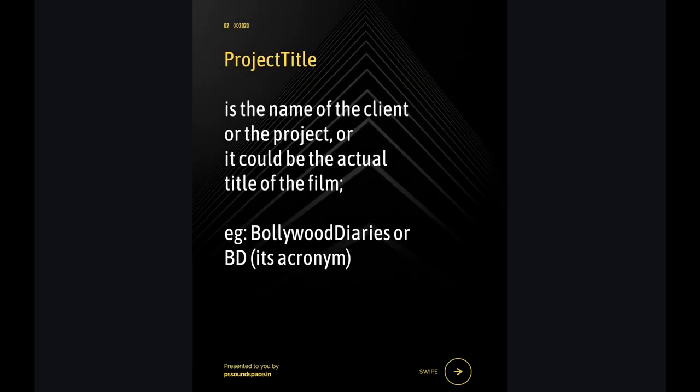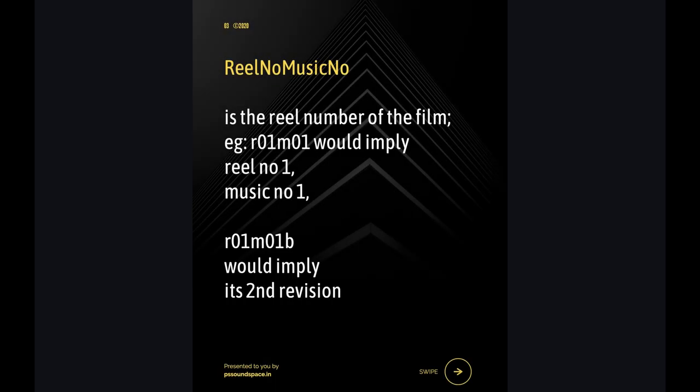Project Title: it is the name of the client or the project, or it could be the actual title of the film. Example: Bollywood Diaries, or BD as its acronym. Reel Number and Music Number: it is the reel number of the film. Example: R01M01 would imply reel number one, music number one.